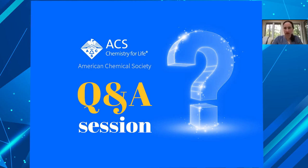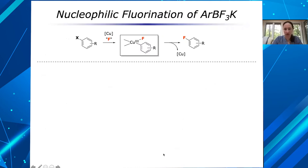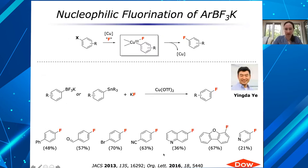I think the question is — let me move things around on my screen — that the pyridines are giving low yields here. So for example, pyridines and quinolines.